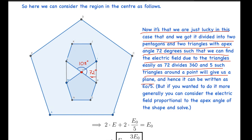the electric field due to one isosceles triangle comes out to be E₀/5. You can do it more naturally: you can consider the electric field proportional to the apex angle of the shape and solve. This comes from the logic that the flux is proportional to the angle.